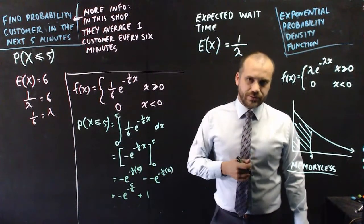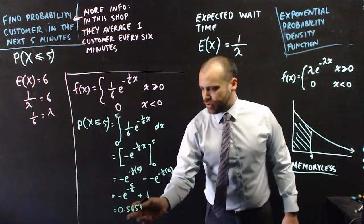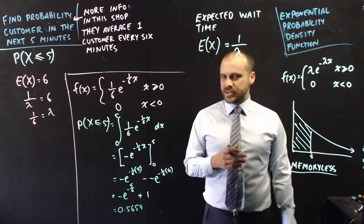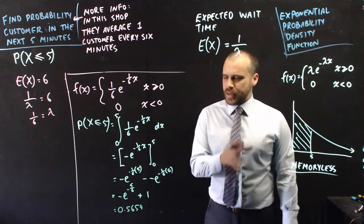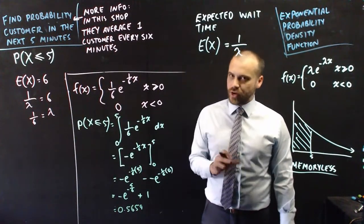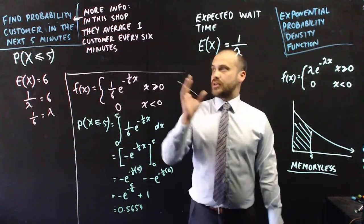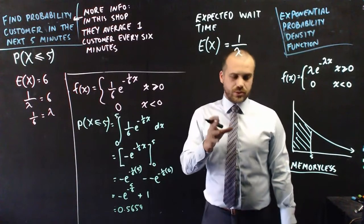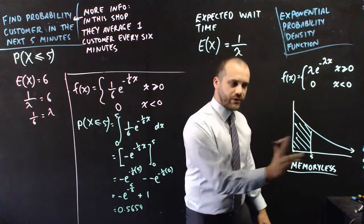And then we can just put that into our calculator. And I get an answer here of 0.5654 that's 56.54%. This is a pretty even bet. There is a 56.54% chance that a customer in this shop will come in somewhere between now and five minutes.